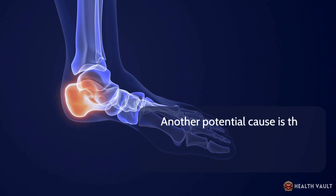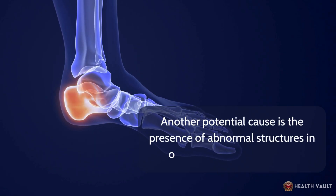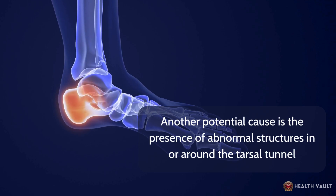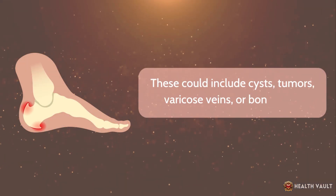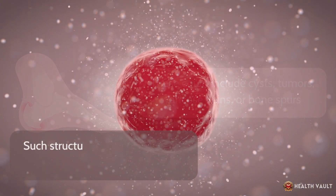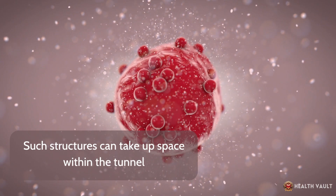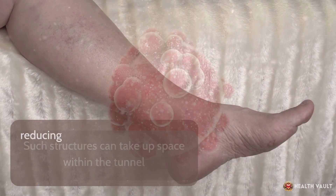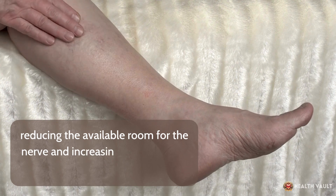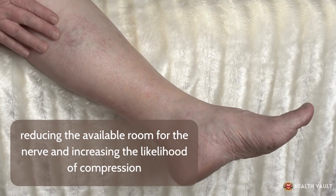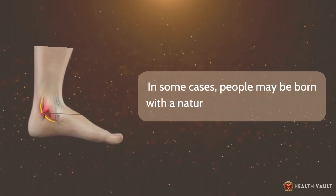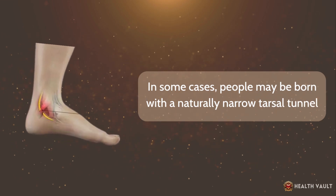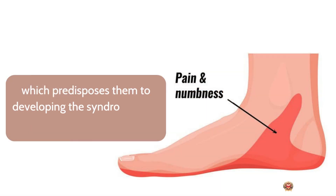Another potential cause is the presence of abnormal structures in or around the tarsal tunnel. These could include cysts, tumors, varicose veins, or bone spurs. Such structures can take up space within the tunnel, reducing the available room for the nerve and increasing the likelihood of compression. In some cases, people may be born with a naturally narrow tarsal tunnel, which predisposes them to developing the syndrome later in life.